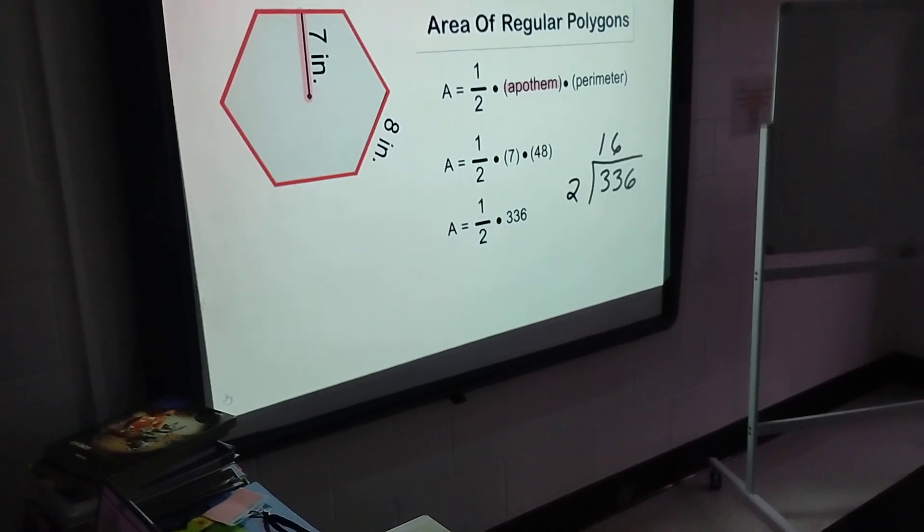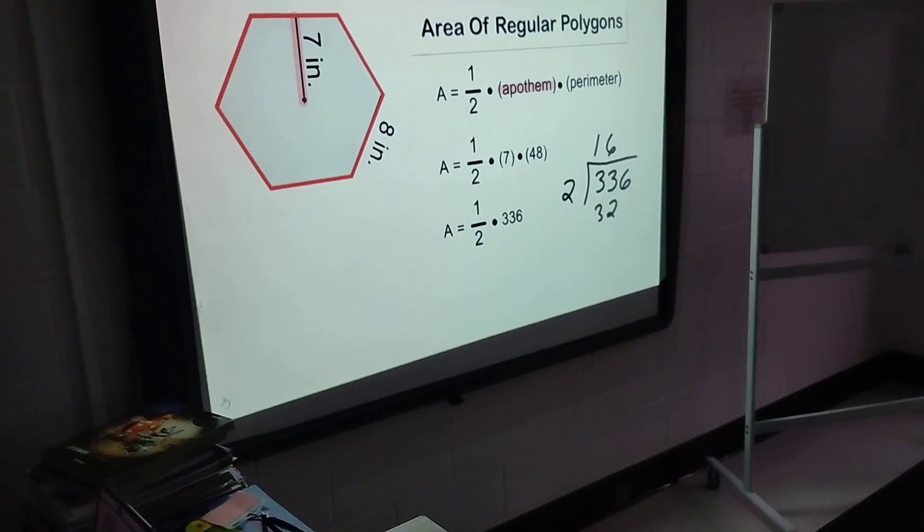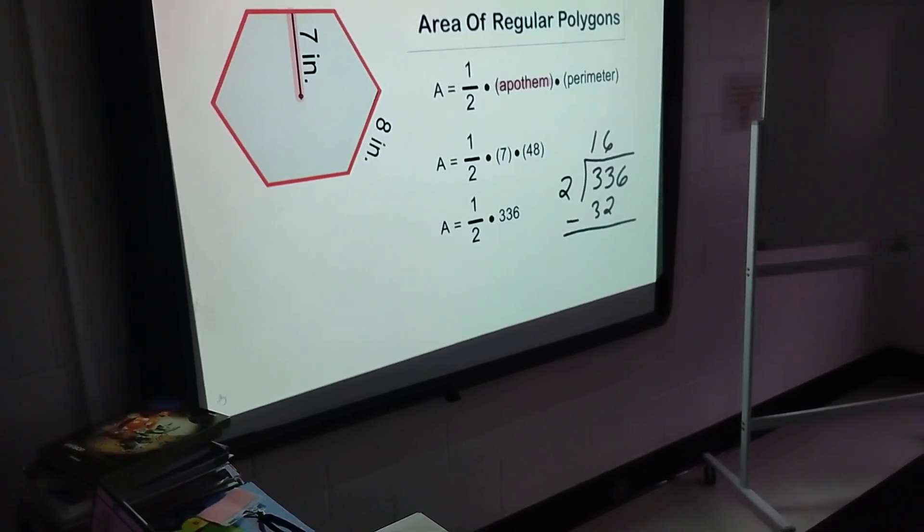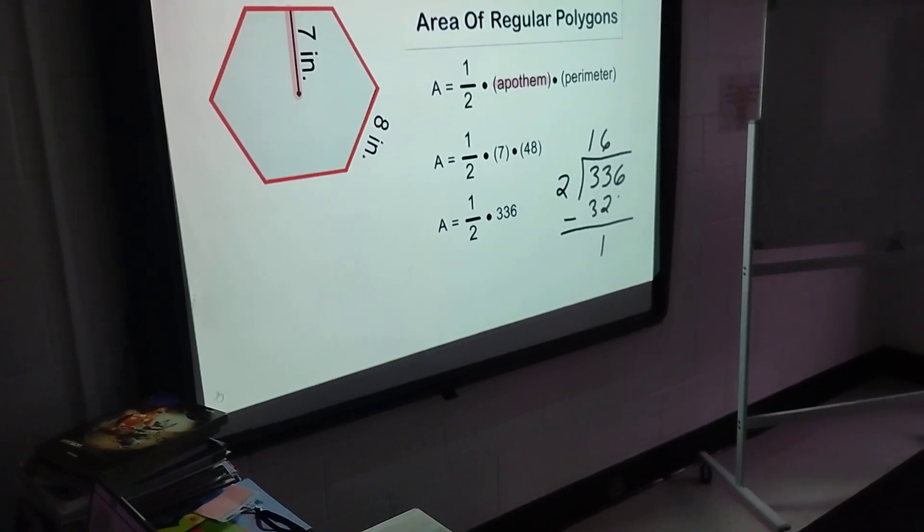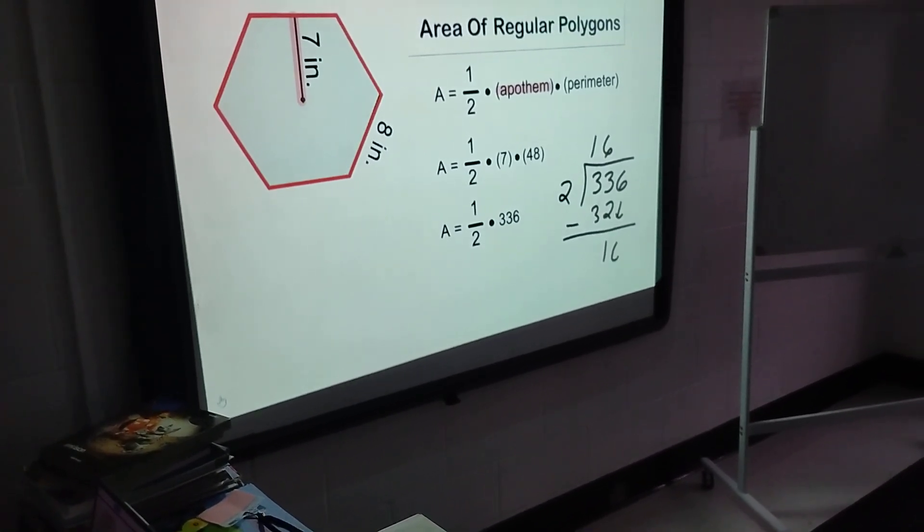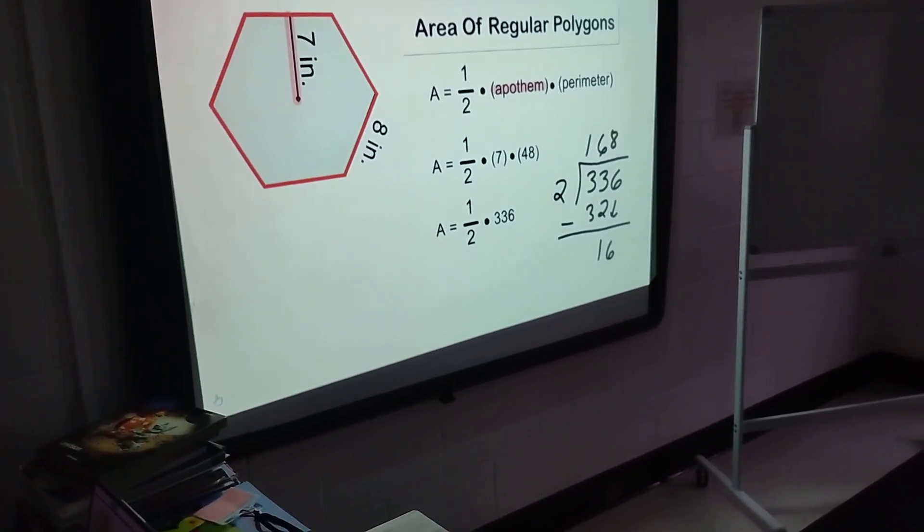We can fit two groups of 16 into 33, which gives us 32. The difference of 33 and 32 is 1. Bringing down the next place value, which is 6, we get 16. We can fit exactly 8 groups of 2 into 16.